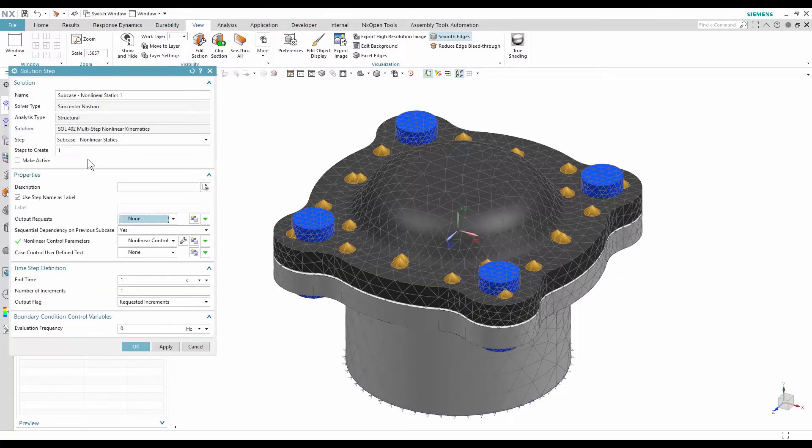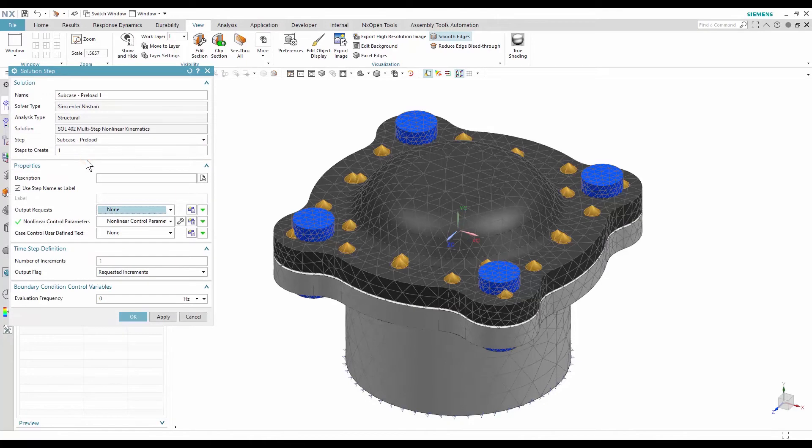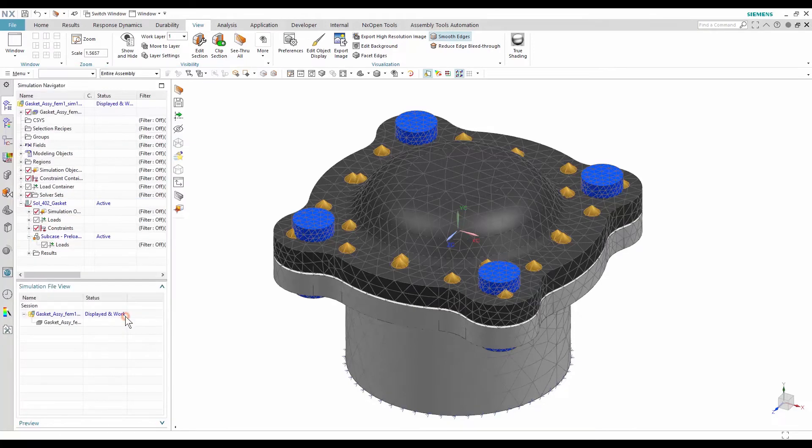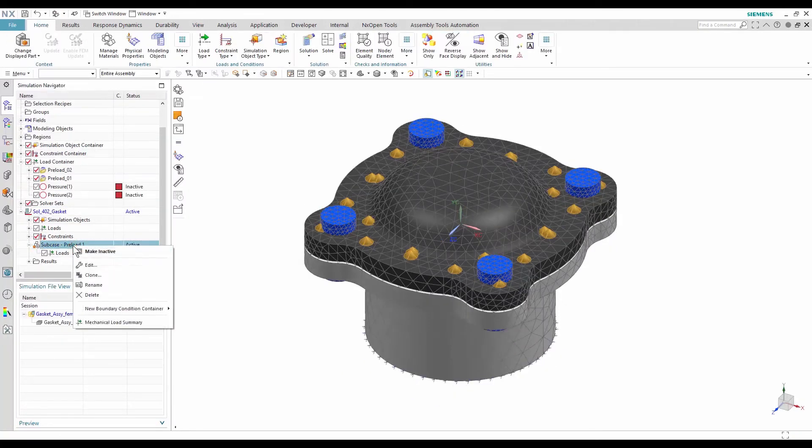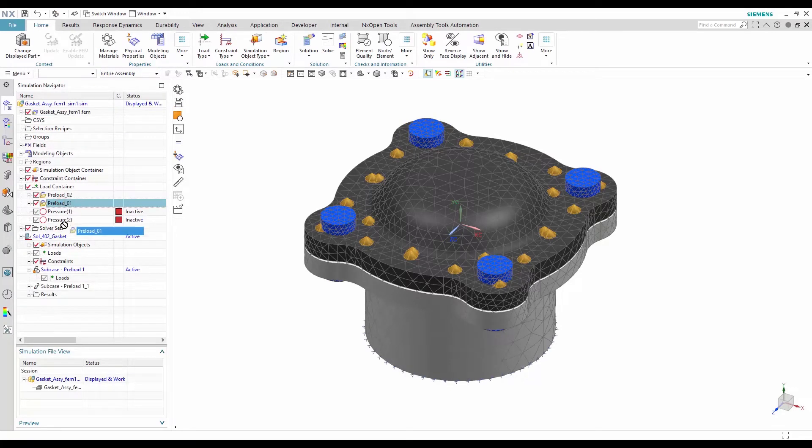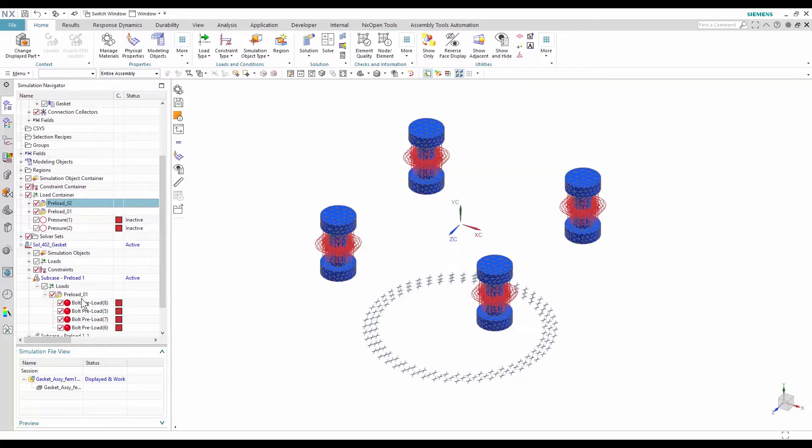I then create two preload subcases. I drag and drop bolt preloads that were already created in those subcases.